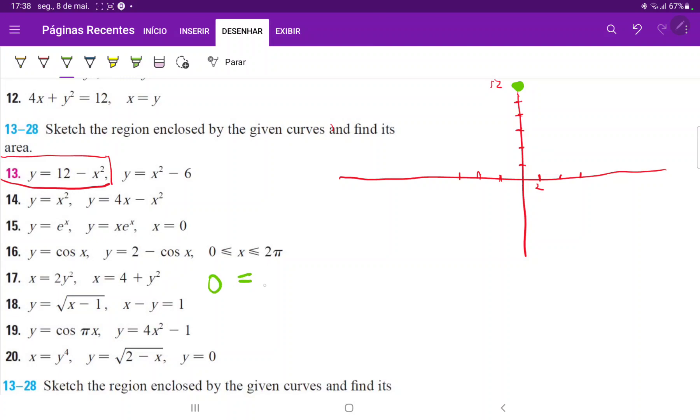So we set 0 is equal to 12 minus x squared. We bring the x squared to the other side. So x squared is equal to 12. And therefore x is equal to square root of 12. Square root of 12 is approximately 3.46. So it is somewhere over here.